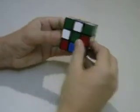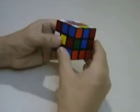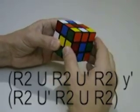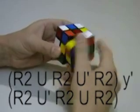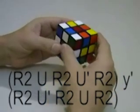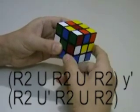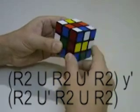Now that I have two pairs, I'll place them on my left-hand side and perform R2, U, R2, U anti-clockwise, R2, whole cube anti-clockwise, R2, U anti-clockwise, R2, U, R2.